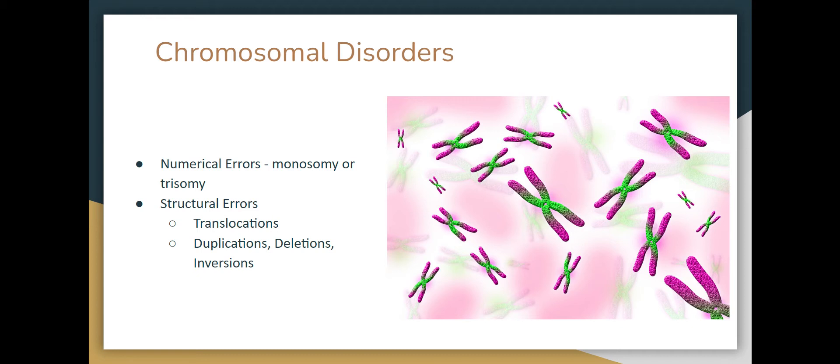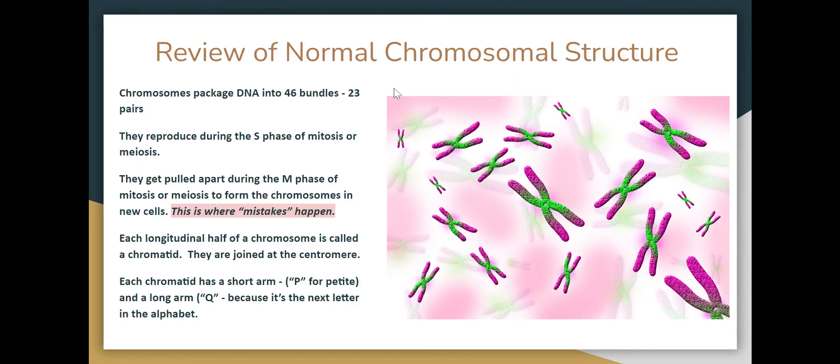The others — duplications, deletions, and inversions — happen more commonly when that cellular material is being multiplied during meiosis, during the S-phase, and bases are added or not added, or they're added in the wrong order. But those are your chromosomal disorders.